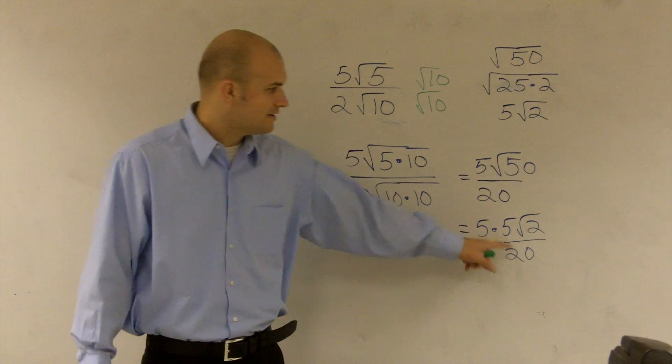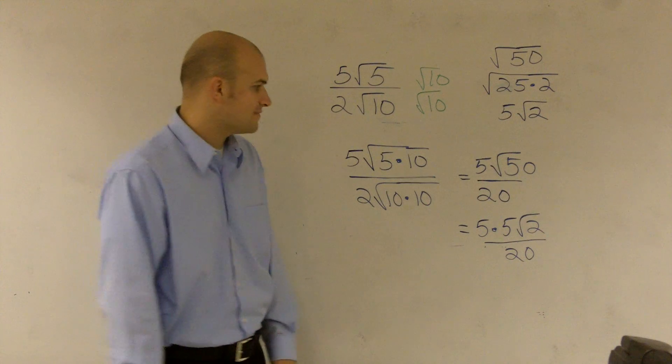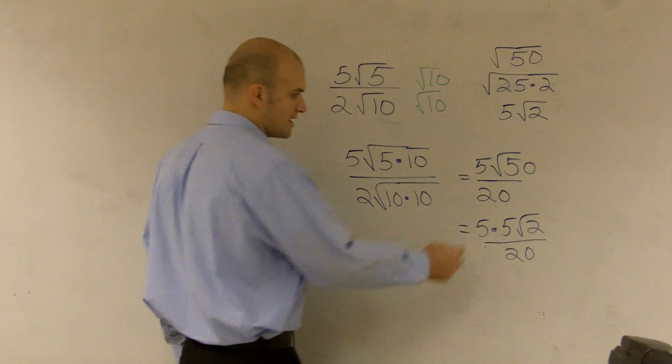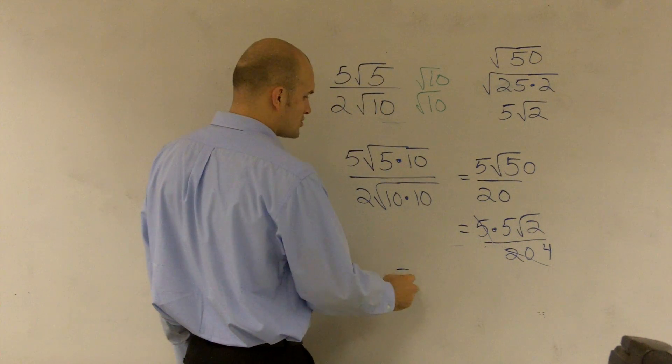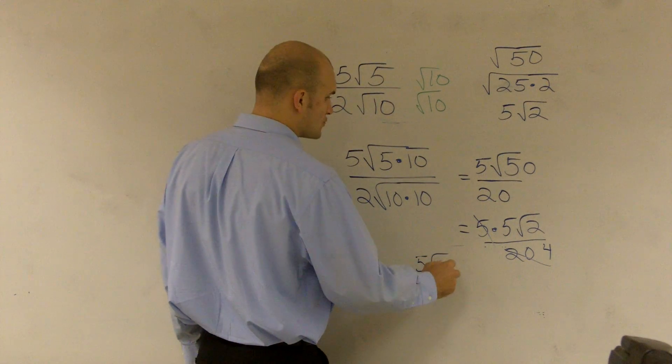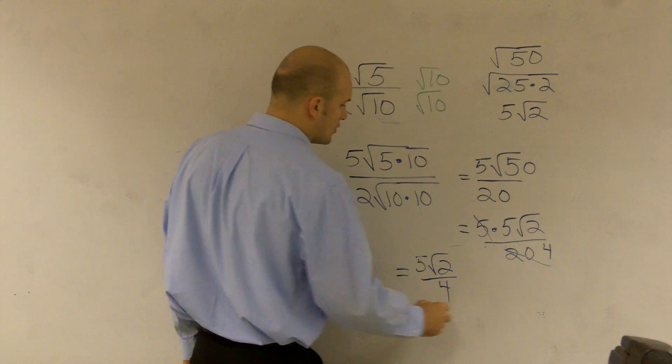I can divide out of 5 and that would give me 5 fourths. If I divide out of 5, that cancels out. And that will be left with a 4. So my final answer is 5 square root of 2 over 4.